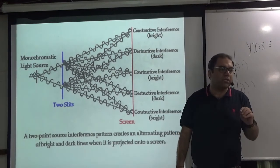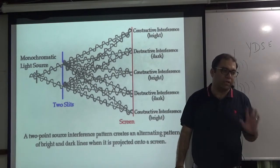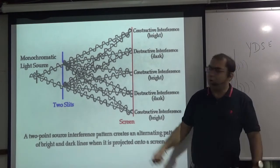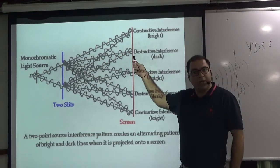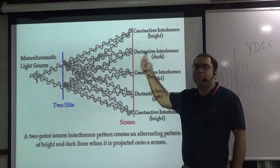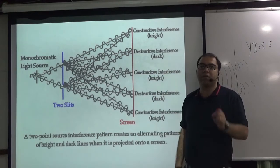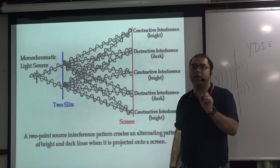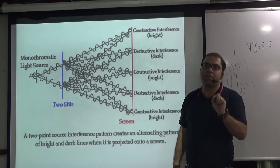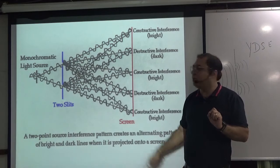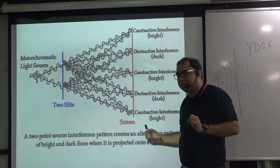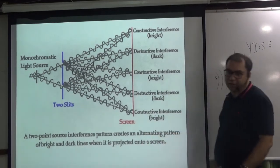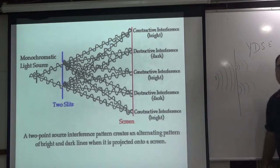Where the light got more than normal, the bright point came — what is that called? Constructive interference. And where the cancellation happened, what is that called? Destructive interference. Constructive, destructive, constructive, destructive.